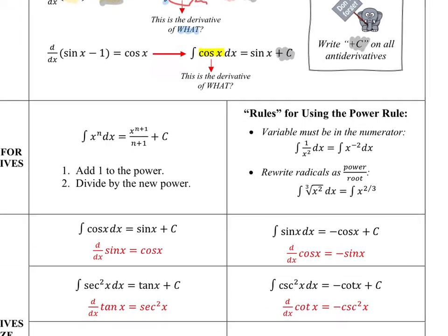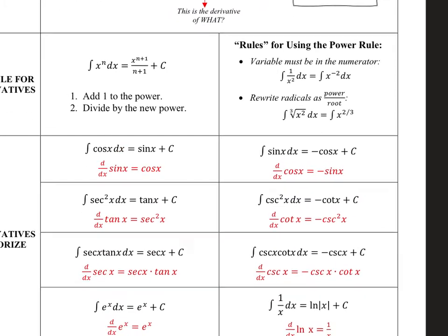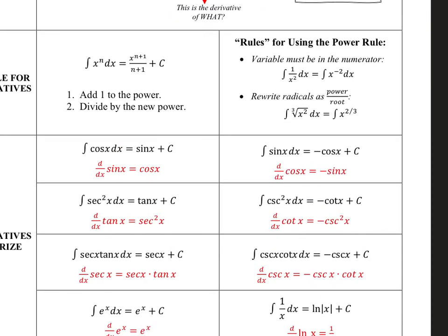At the bottom of the page, you have all the antiderivatives you need to know. The first is the power rule for integration — it's the opposite of the derivative power rule: add one to the power, divide by the new power, and don't forget your plus c. Some rules for using this power rule: if you have a variable in the denominator, rewrite with a negative exponent. If you have a radical, rewrite it as a fractional exponent before applying the power rule.